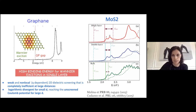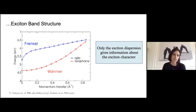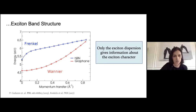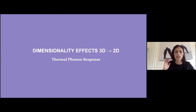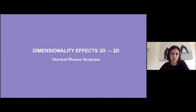In order to discriminate Wannier from Frenkel character, one can plot the exciton dispersion: for a system with a Wannier exciton you have a quadratic dispersion, while for the Frenkel exciton at very low momentum transfer you still have a linear slope. So now coming back to the main topic of my talk — what happens when, instead of speaking about the electronic framework, we go to the phonon framework?